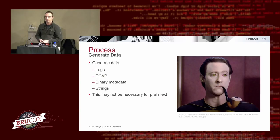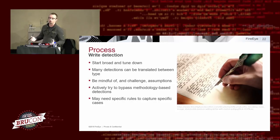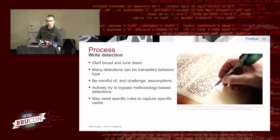Once you understand what you're working with and where you'll build detections, generate the data — logs, PCAP, binary metadata, strings, depending on what you're working towards. Then start writing: always start broad and tune down. It's much easier to work that way than to start narrow and try to expand. Starting narrow means making assumptions about what you'll need to maintain your target FP rate. Keeping things broad means working empirically — seeing what's actually causing problems rather than assuming.